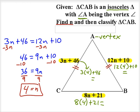So 12 times 4 plus 10, that's 48 plus 10 is 58, and likewise 3 times 4 plus 46 is 58.